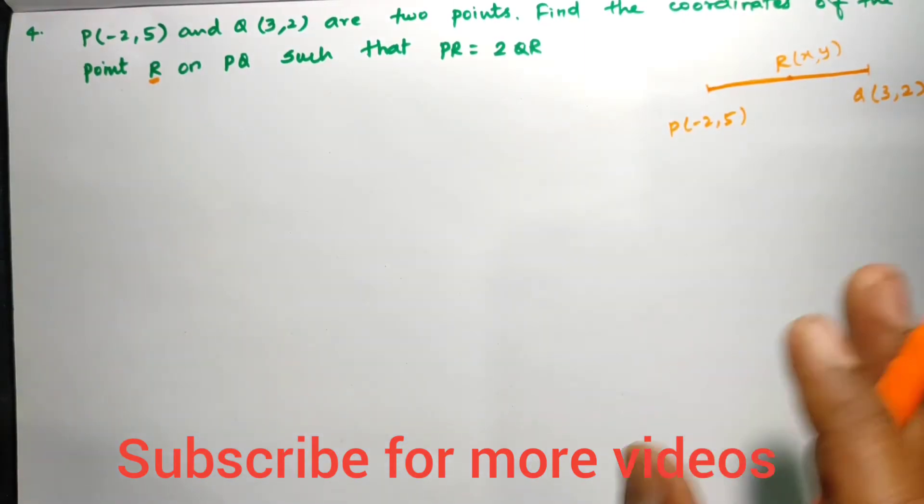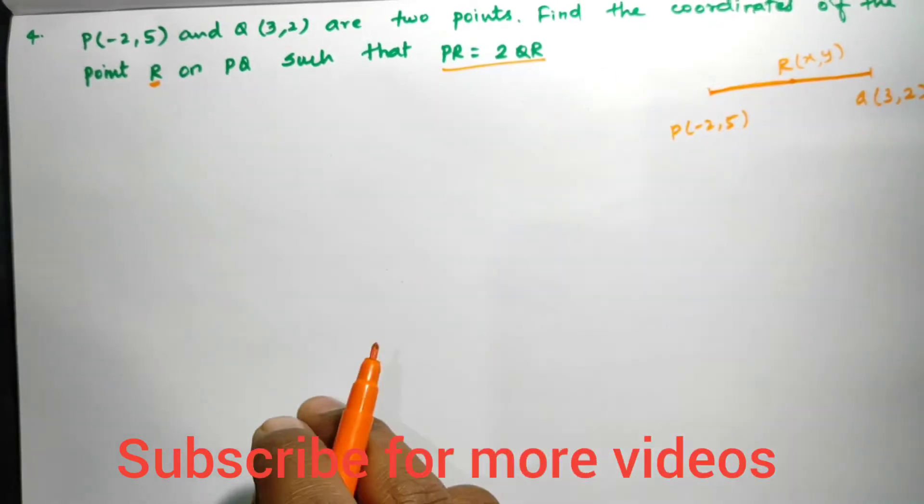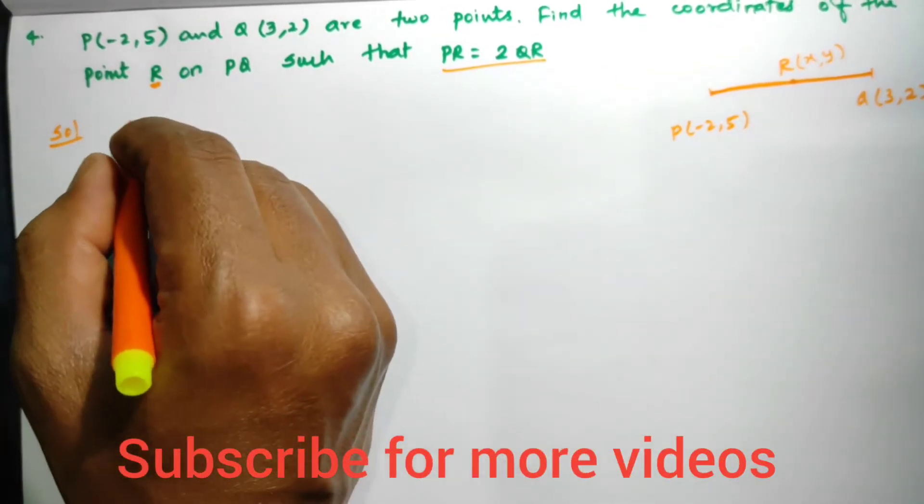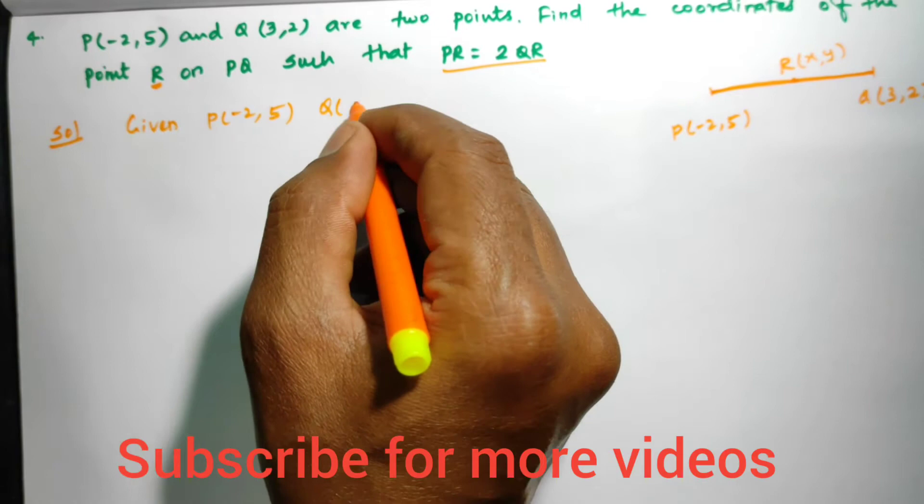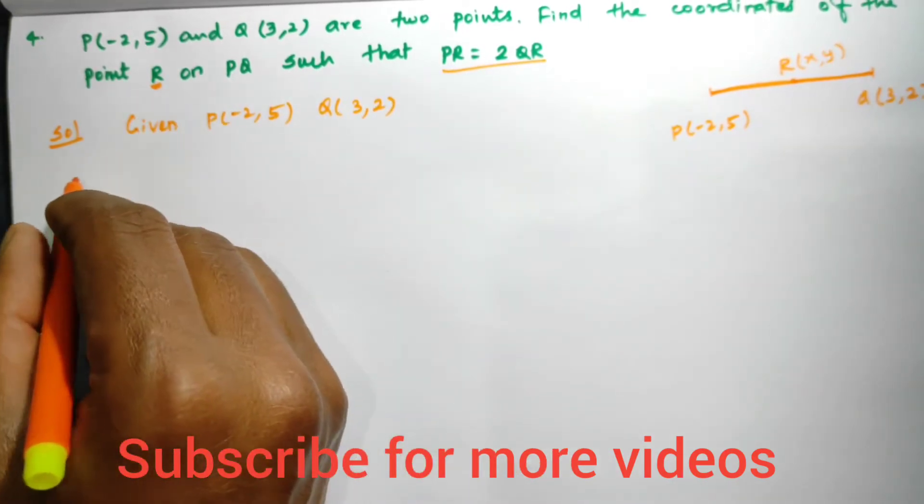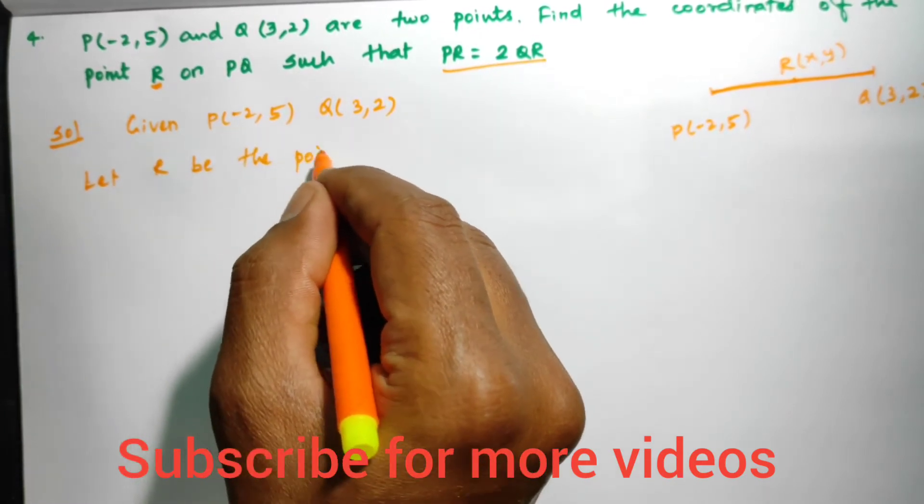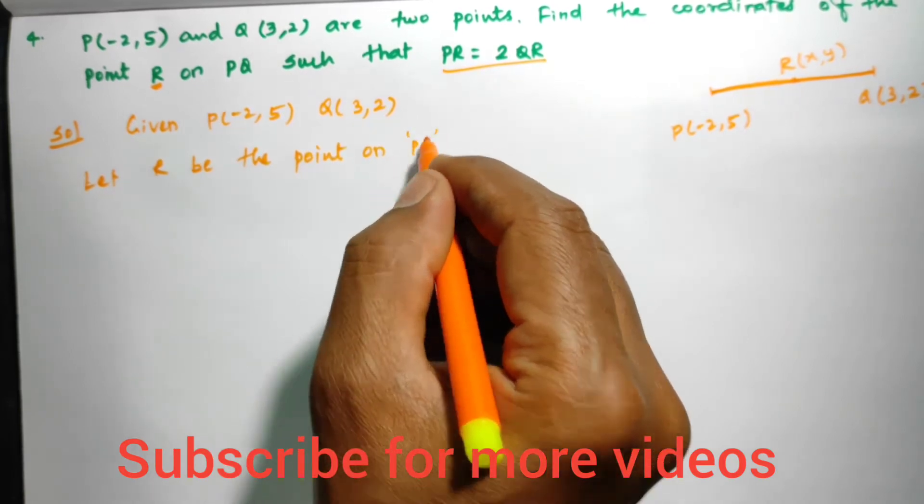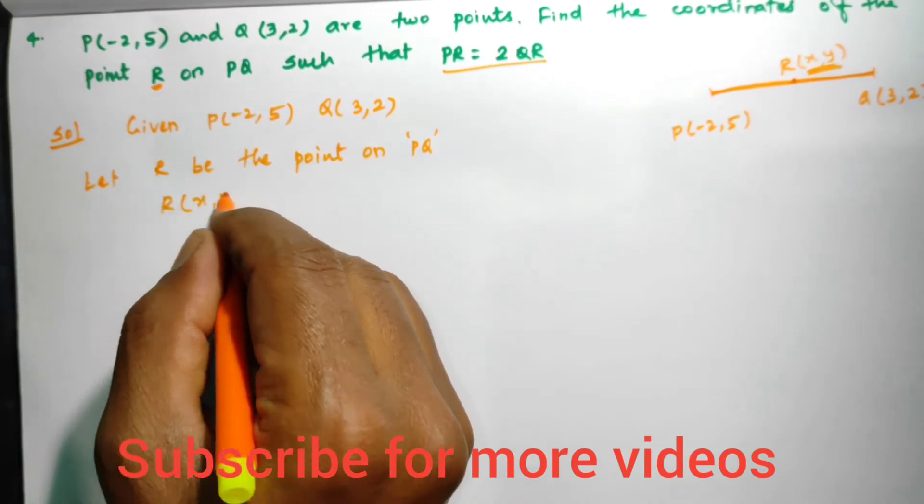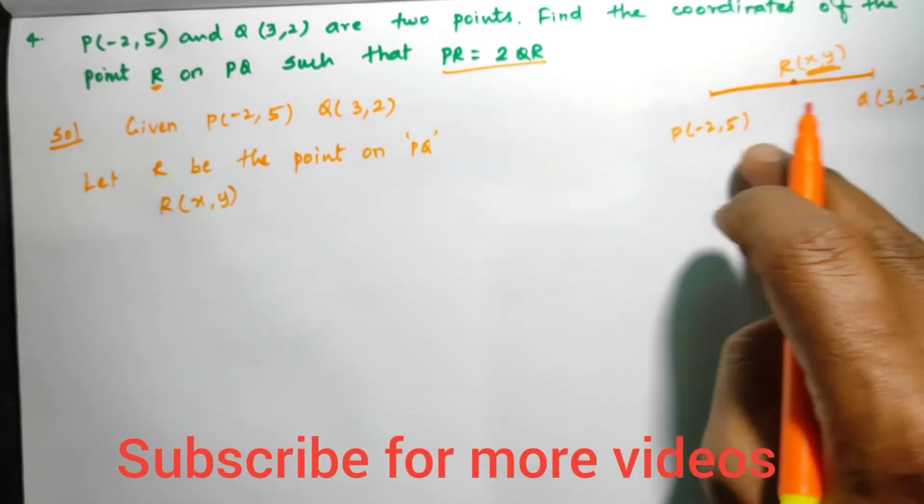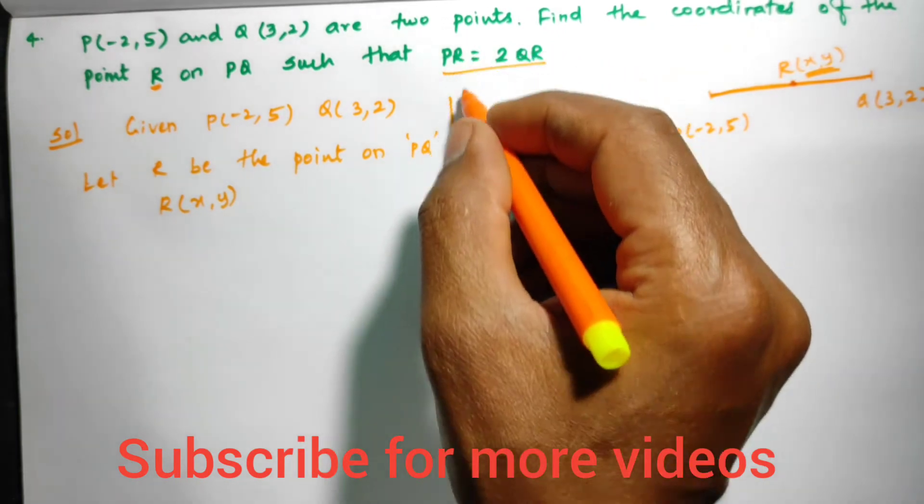Let R point be (x, y). Such that one condition is given. Using this condition, let's find out the ratio. Given points P(-2, 5) and Q(3, 2), and let R be the point of division on PQ. The R point coordinates we have to calculate. This is the point of division for these two points. We can use the point of division formula, but before that one thing is given.